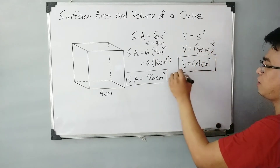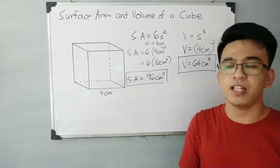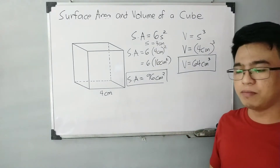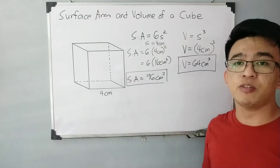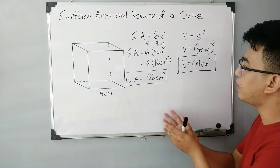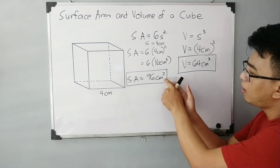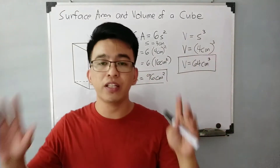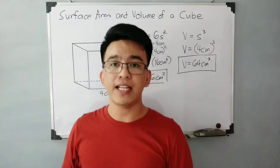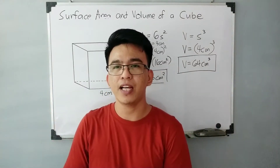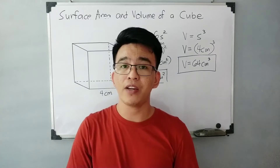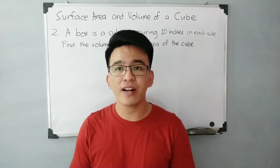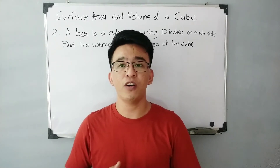Remember this: whenever we are calculating for the volume, the unit of measurement of your final answer is always cubic. And when it's surface area, since it is area, the exponent of the unit is squared. So in the next part of our video, I will give you one more example to better understand how to calculate the surface area and volume of a cube. Now let us solve example number 2 with regards to the surface area and volume of a cube.